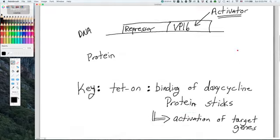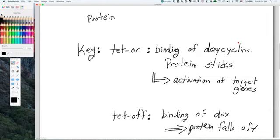And so again, in the tet-on system, the binding of doxycycline causes the protein to stick to the operator and allows for activation of target genes. In the tet-off system, the binding of doxycycline causes that fusion protein to fall off the operator and turns off transcription.